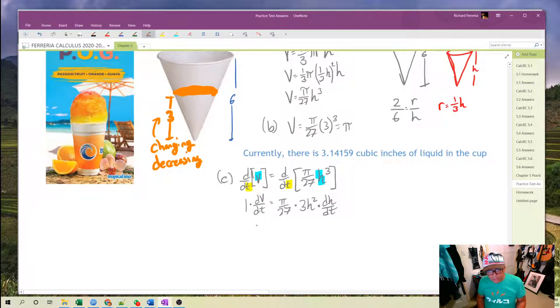Let's clean that up a little bit and we get dV/dt. That's equal to pi over 9 multiplied by h squared dh/dt. So that's our part c and part d.